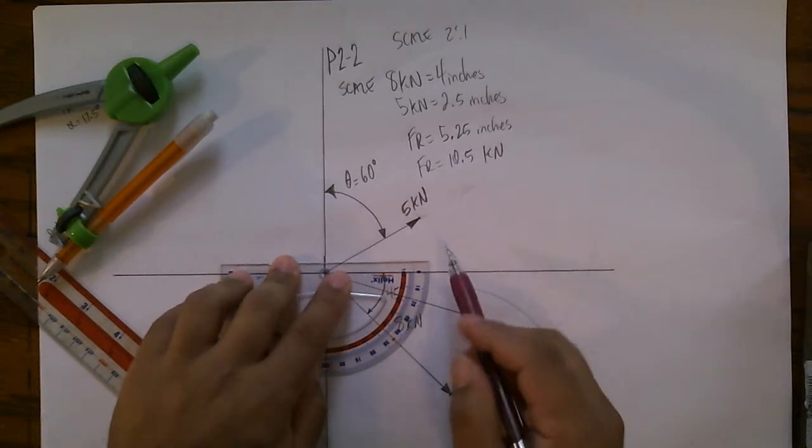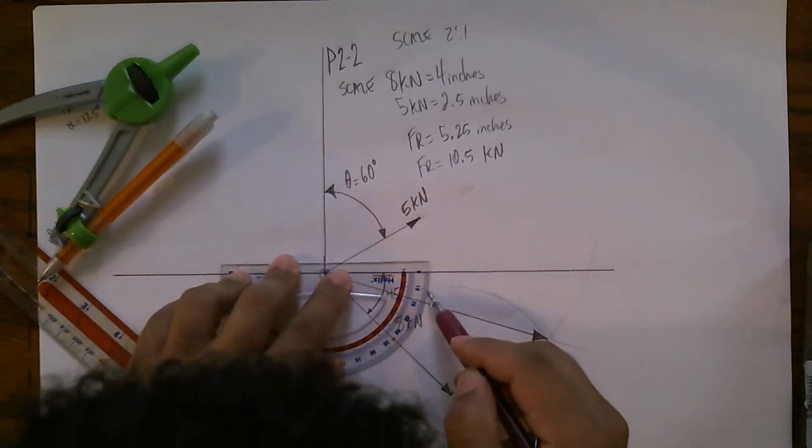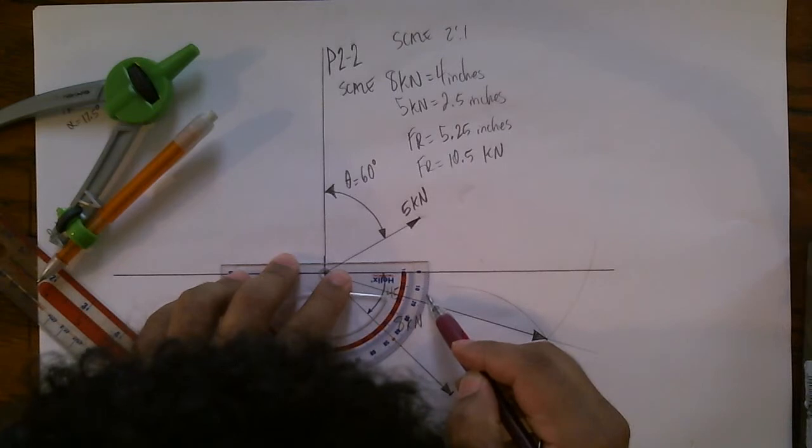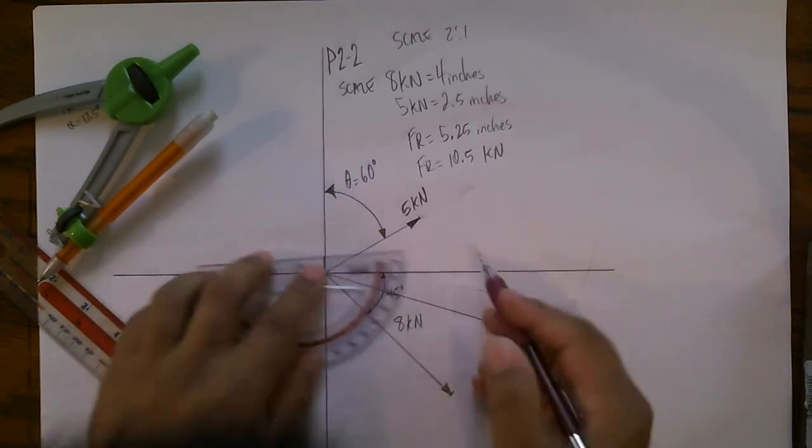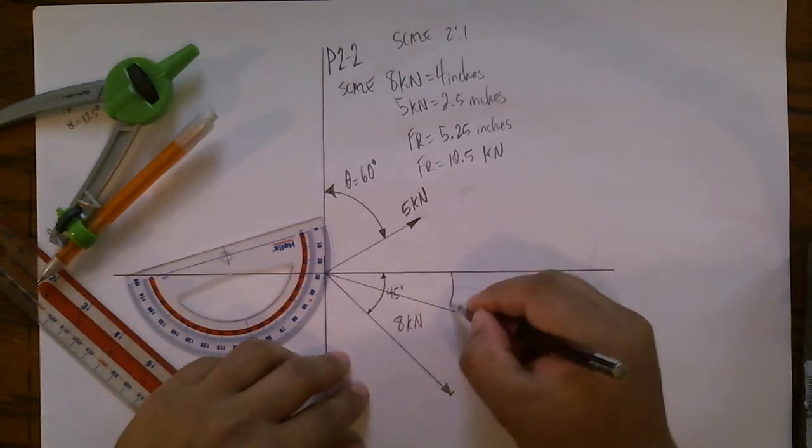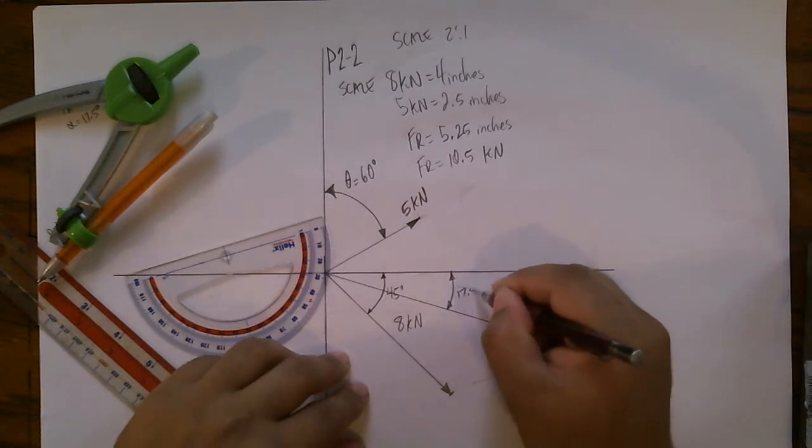So we can count here, from here to here: here's 10, 11, 12, 13, 14, 15, 16, 17, about 17 and a half. So 17.5 degrees.